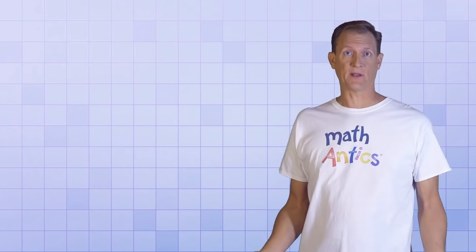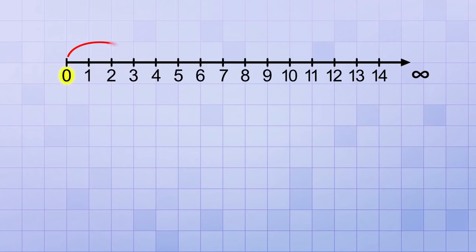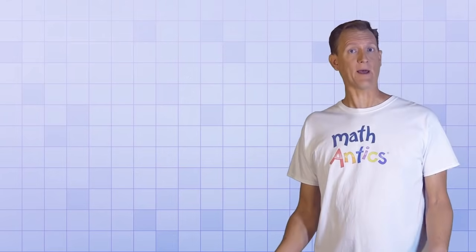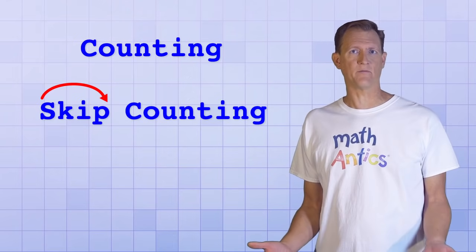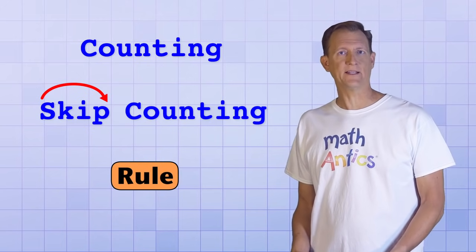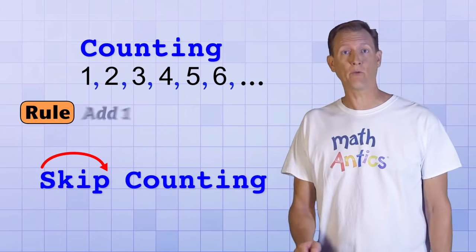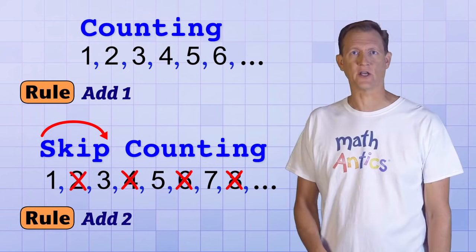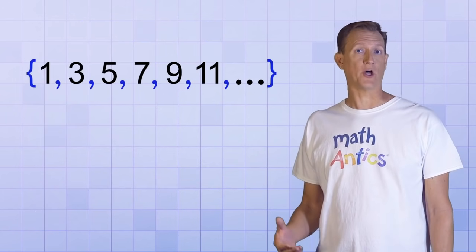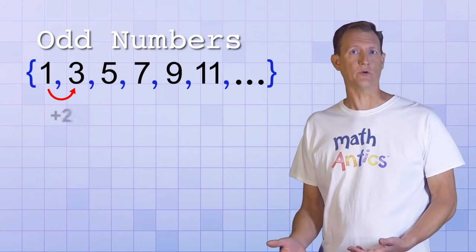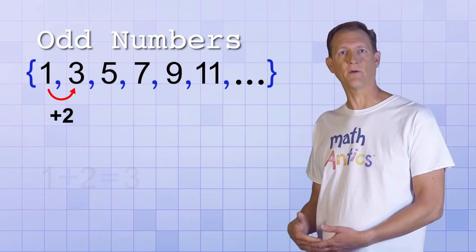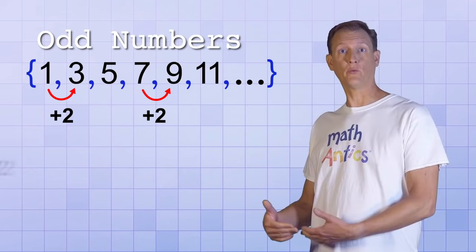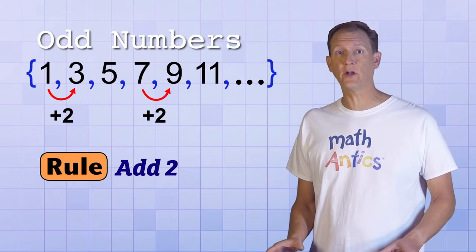You could make other sequences by skip counting by different amounts, like starting with 0 and skipping every 2 numbers to get 0, 3, 6, 9, 12 and so on. Counting and skip counting are really just ways of making a number sequence by following a rule. For regular counting, the rule is add 1 to get each new number. When you skip count every other number, the rule is add 2 each time. You can see that in the odd numbers sequence — 1 plus 2 equals 3, and 7 plus 2 equals 9. If you know the rule a sequence is based on, you can use it to find any other number in the sequence.